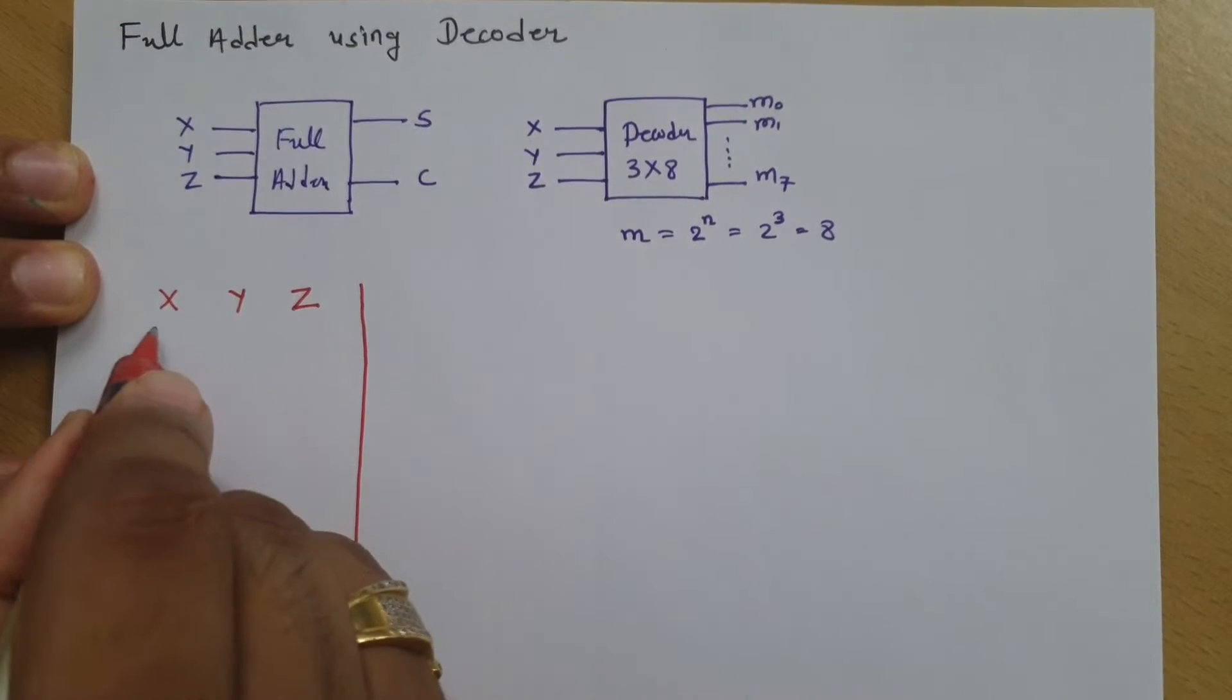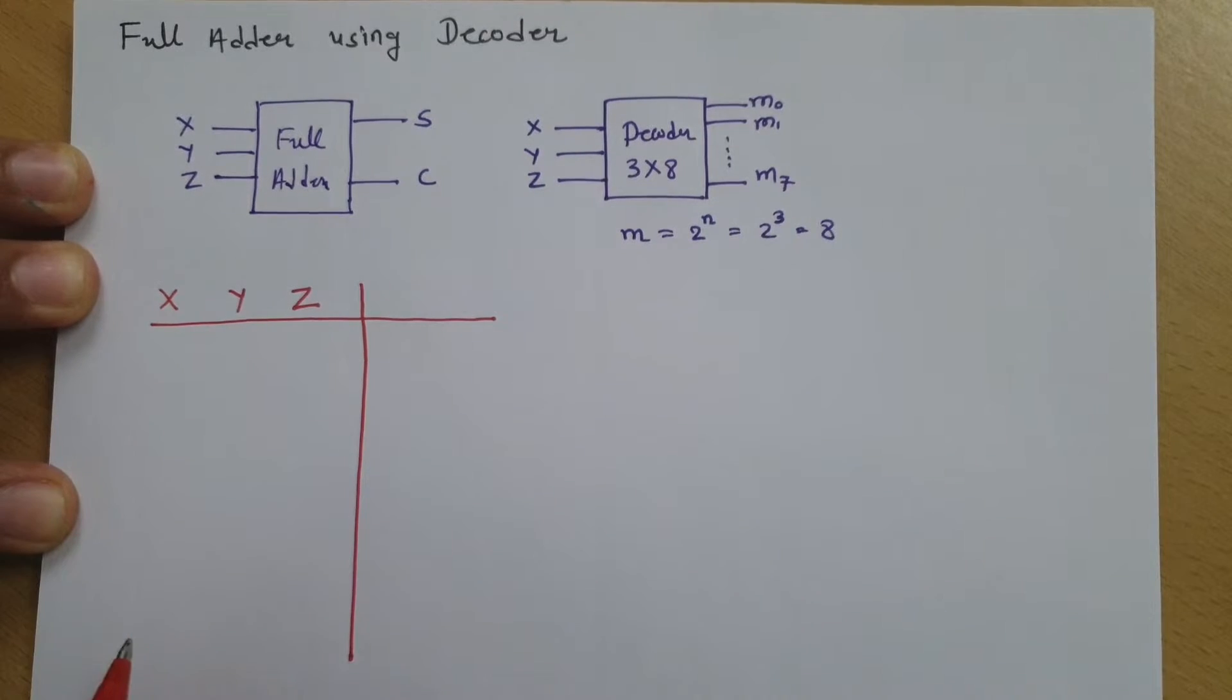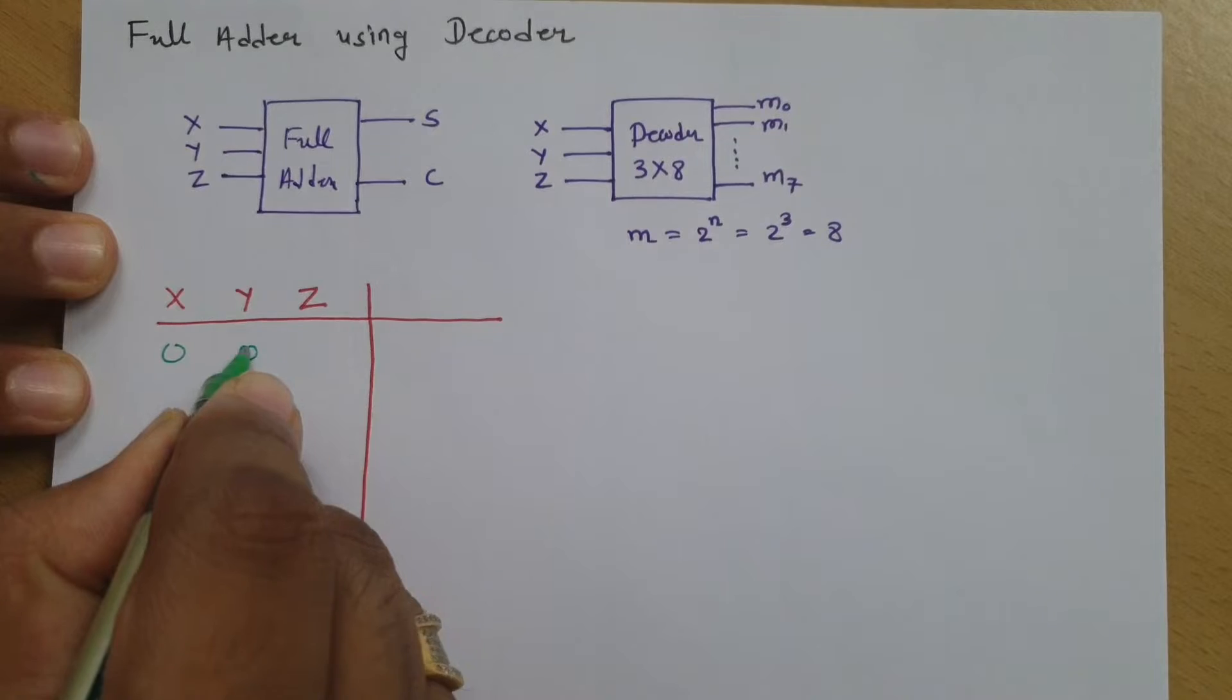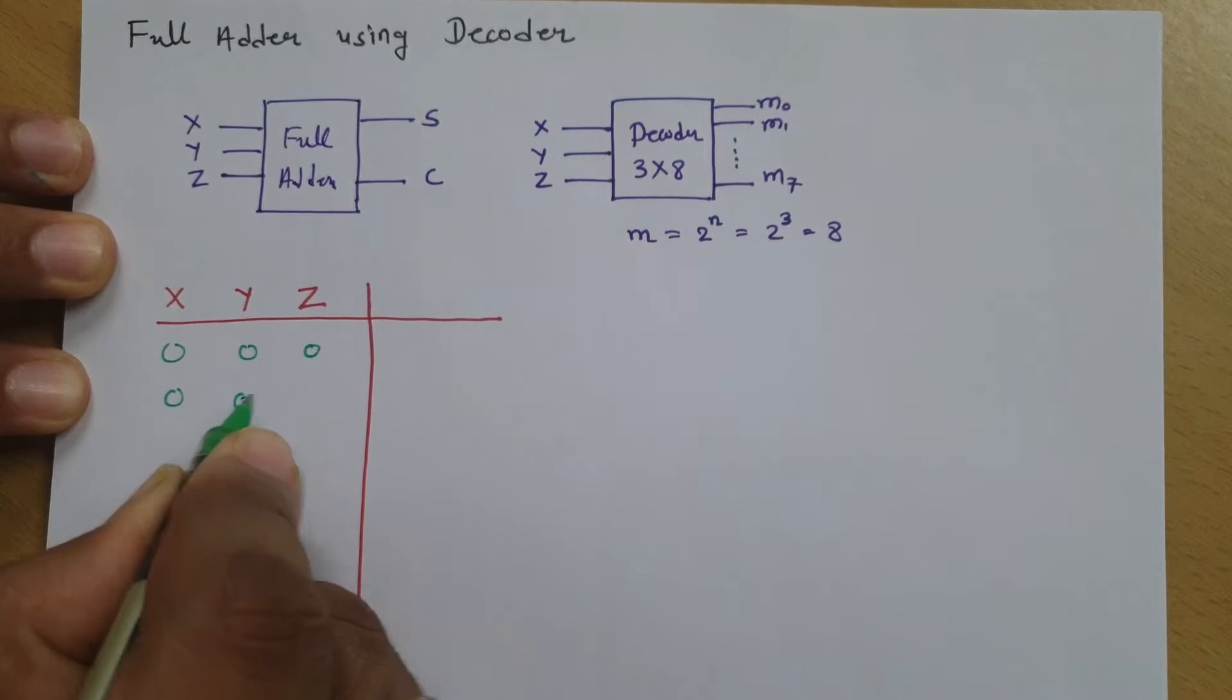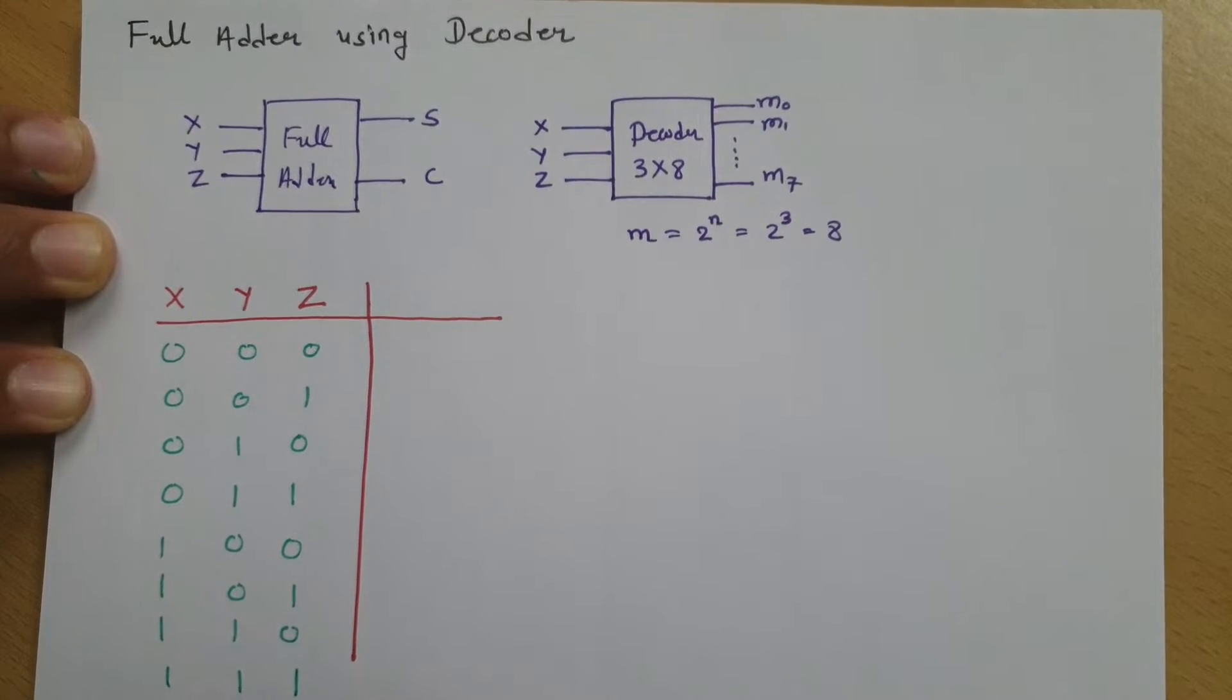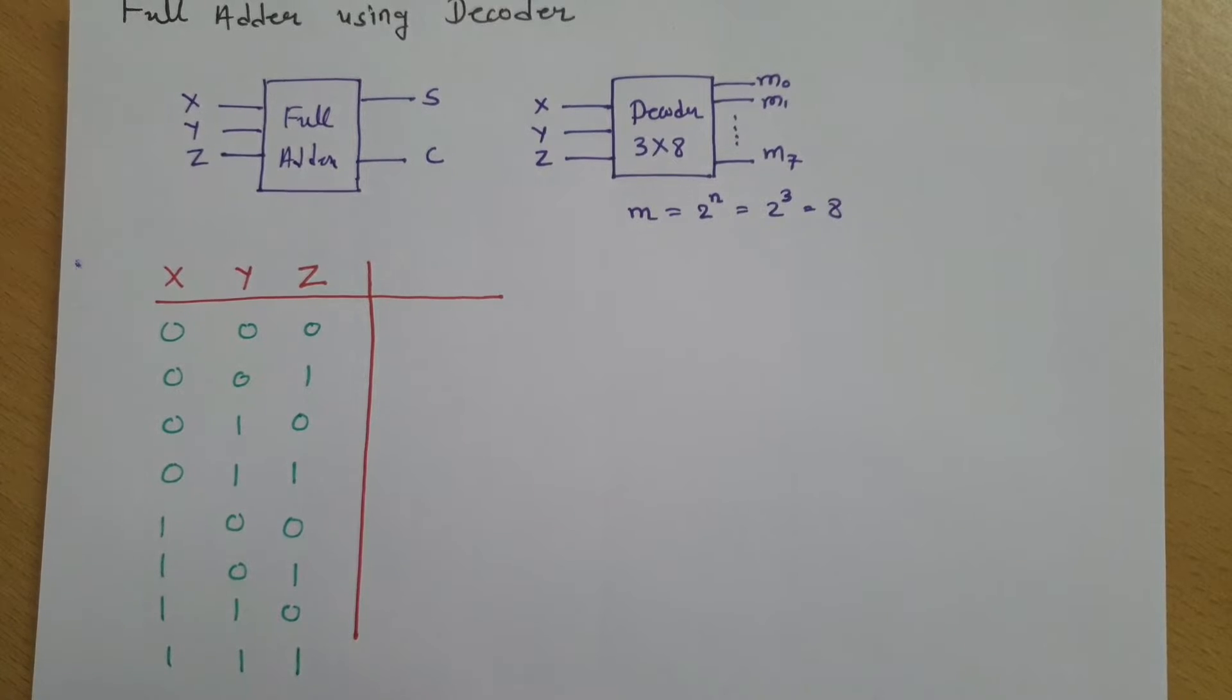Now with these inputs, total combination of outputs are 0,0,0, then 0,0,1, then 0,1,0, 0,1,1, 1,0,0, 1,0,1, 1,1,0, and 1,1,1. So these are my possible input combinations that we have.